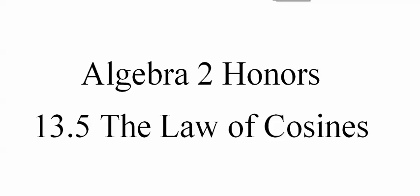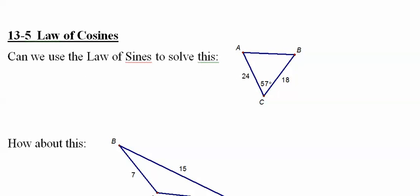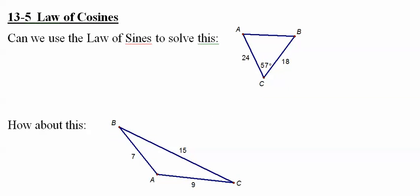Algebra 2 Honors lesson 13.5, the law of cosines. We did law of sines but it doesn't always work, so we look for situations like this one. We say can we do this? Well, let's try law of sines. We'd have to use this 57 degree angle but we don't know little c, and then we could pick either one. Let's go with sine of A and we know 18, so we have two unknowns.